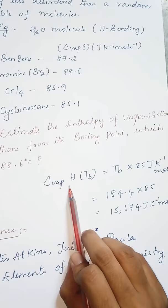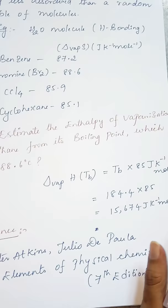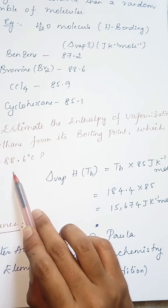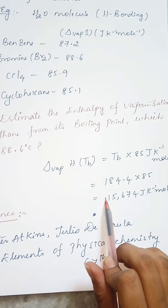How can you determine the enthalpy of vaporization? Simply by substituting the boiling temperature given here into 85 Joule K inverse mole inverse, this is the Trouton's value. The Tb is actually -88.6, convert into Kelvin, so you will get the value 184.4 × 85. So this is the calculated value.